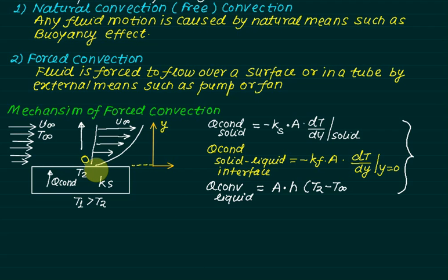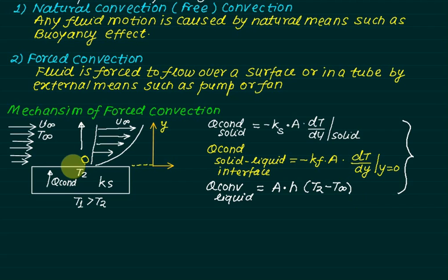The velocity at the wall is zero, which is called the no-slip condition. As a result, heat transfer from the solid wall to the adjacent fluid layer is purely by conduction, which is why Fourier's law is applied there, and the same heat is then transferred by convection. By equating equations 1, 2, and 3, we can find the value of h.